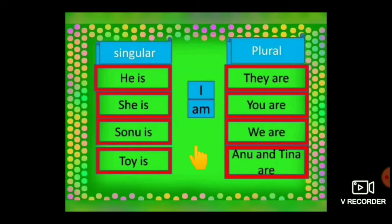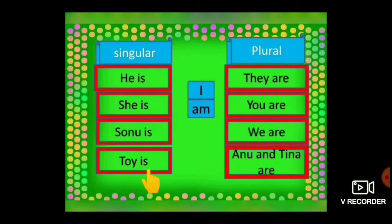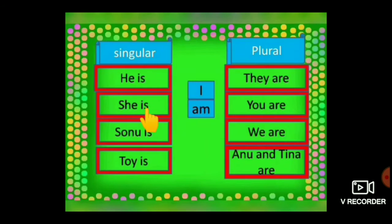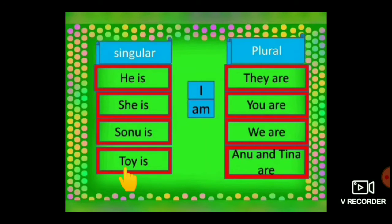Look at these examples. Singular: He is, She is, Sonu is, Tina is. Observe children — after a singular pronoun we use IS. He is, She is. After a singular noun also we use IS only. Sonu is, Tina is — naming words.